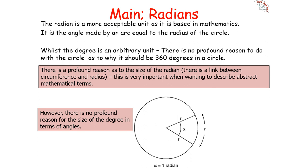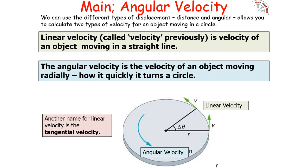The radian is a much more acceptable unit as it is based in mathematics — it is an angle made by an arc equal to the radius of the circle. The degree is an arbitrary unit; there is no profound logical reason why there should be 360° in a circle, whereas there is a profound reason for the size of a radian: it is the link between circumference and radius. To summarise velocity types: linear velocity is the velocity of an object moving in a straight line, and angular velocity is the velocity of an object moving radially — how quickly it turns in a circle. Another name for linear velocity is tangential velocity.